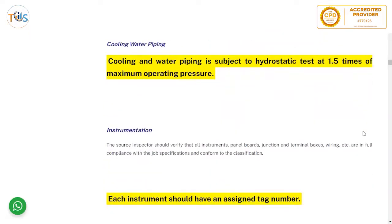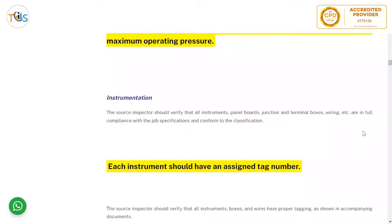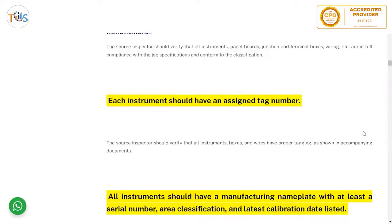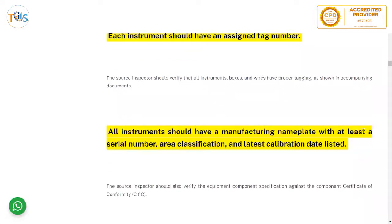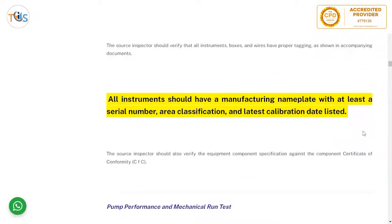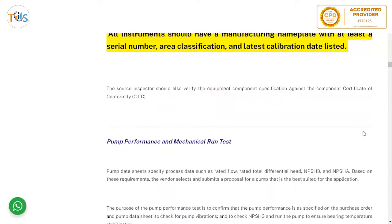Cooling water piping is subject to hydrostatic test at one and a half times maximum operating pressure. For instrumentation, the source inspector should verify that all instruments, panel boards, junction and terminal boxes, wiring, etc. are in full compliance with the job specification and conform to classification. Each instrument should have an assigned tag number, and the source inspector should verify that all instrument boxes and wires have proper tagging. All instruments should have a manufacturing nameplate with at least a serial number, area classification, and latest calibration date listed.